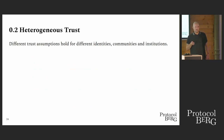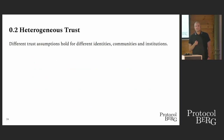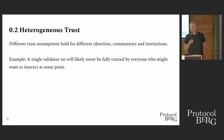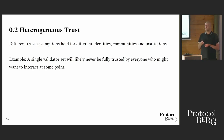So now what is heterogeneous trust? Basically, we have different trust assumptions for different agents, institutions, communities, whatever. For example, a single validator set will probably never be one that everybody can trust who ever wants to interact on some protocol.